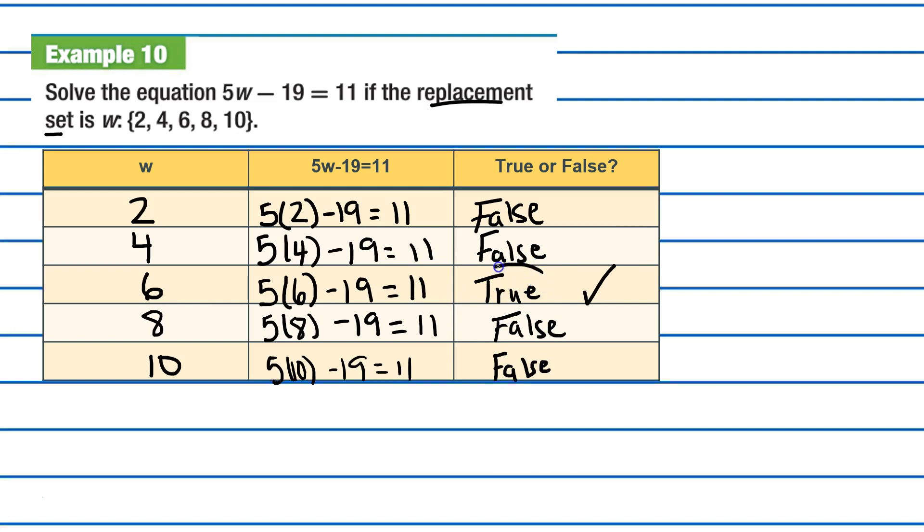As we can see here, we only have one true answer. And, because of that, we know the solution of 5 times w minus 19 is equal to 11. And, that is true when w equals 6. And, there we go.